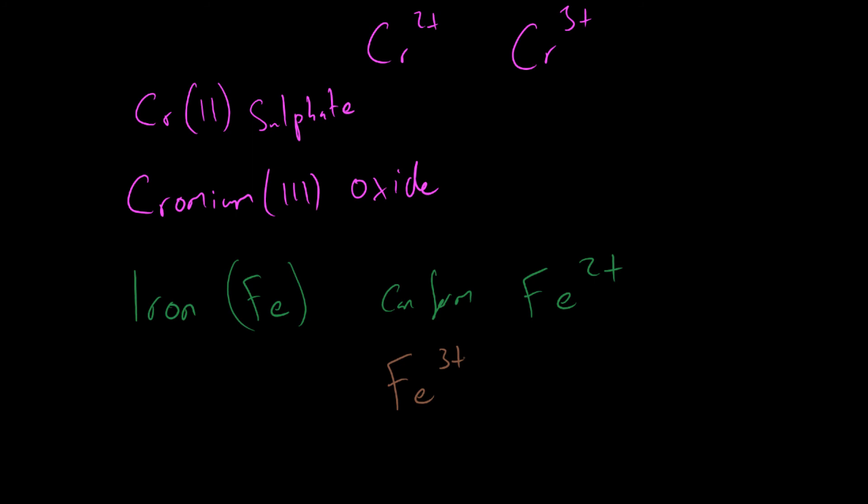So we can form iron 2 oxide. We can form iron 3 oxide. And they will obviously have different formulas. So this one is written as iron 3 oxide. And the iron 2 would be written as iron 2 oxide.